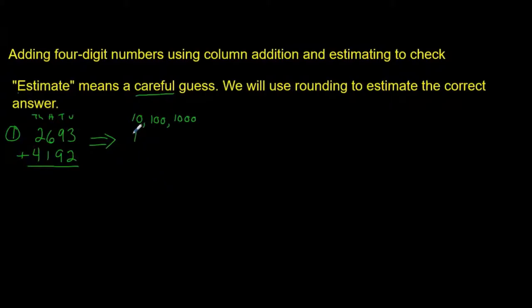If we estimate to the nearest set of 10, our estimate is going to be very close to the actual answer. If we estimate to the nearest set of 100, our estimate will be close, but it won't be exact. It won't be as close as if we used rounding to the nearest set of 10. So we're fairly close.